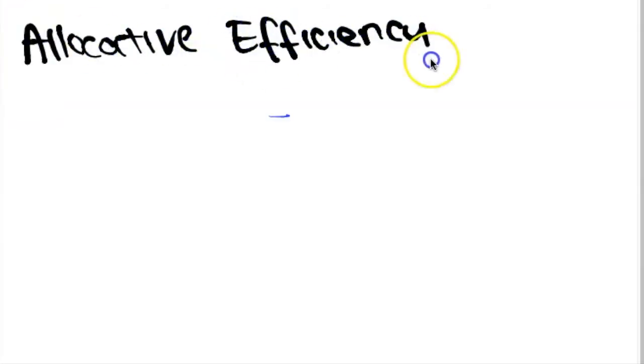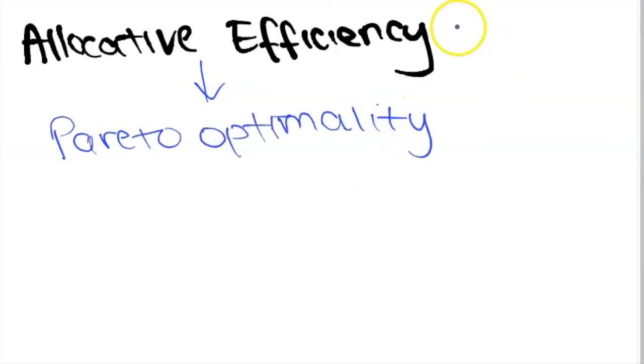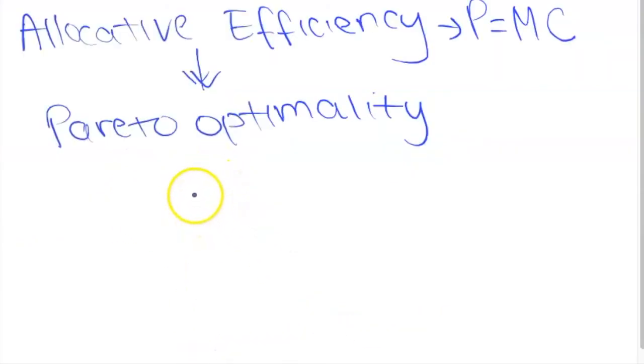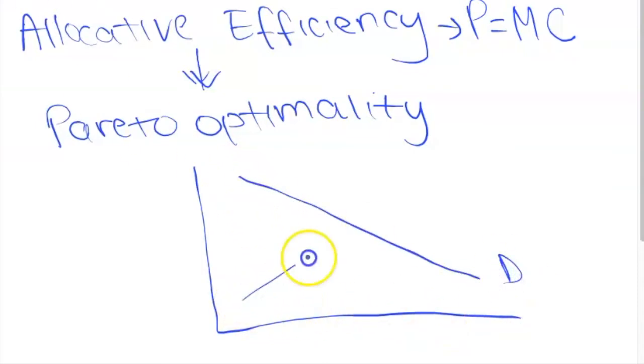We also say that the invisible hand and the price mechanism, if left undisturbed, leads to allocative efficiency. Allocative efficiency is a state of Pareto optimality, meaning that you can't make somebody better off without making someone worse off. It is considered the optimal situation in a market. And it is given by the condition P equals MC. We also say that allocative efficiency maximizes consumer and producer surplus.